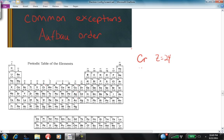Let's write the electron configuration for chromium and let's use the noble gas shortcut. Argon is a noble gas that comes before chromium, so we'll say argon, and then after argon...